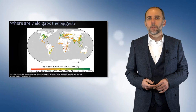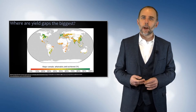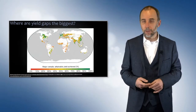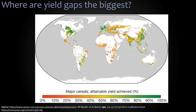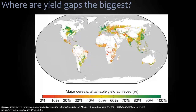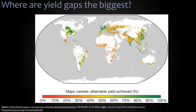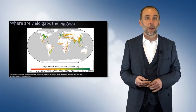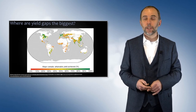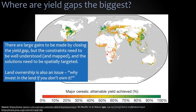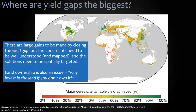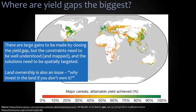So where are these yield gaps? This global map showing areas where crops are produced tells you where the attainable yield is reaching its maximum — 100%. In dark green, these areas are already at the limit of what we think can be attained. The areas in red and yellow are where there's still a big gap between actual and attainable yield. There's a lot of variation, but also a lot to be gained if we can close that yield gap. We need to understand and map the constraints, and solutions need to be spatially targeted — doing the right thing in the right place at the right time.